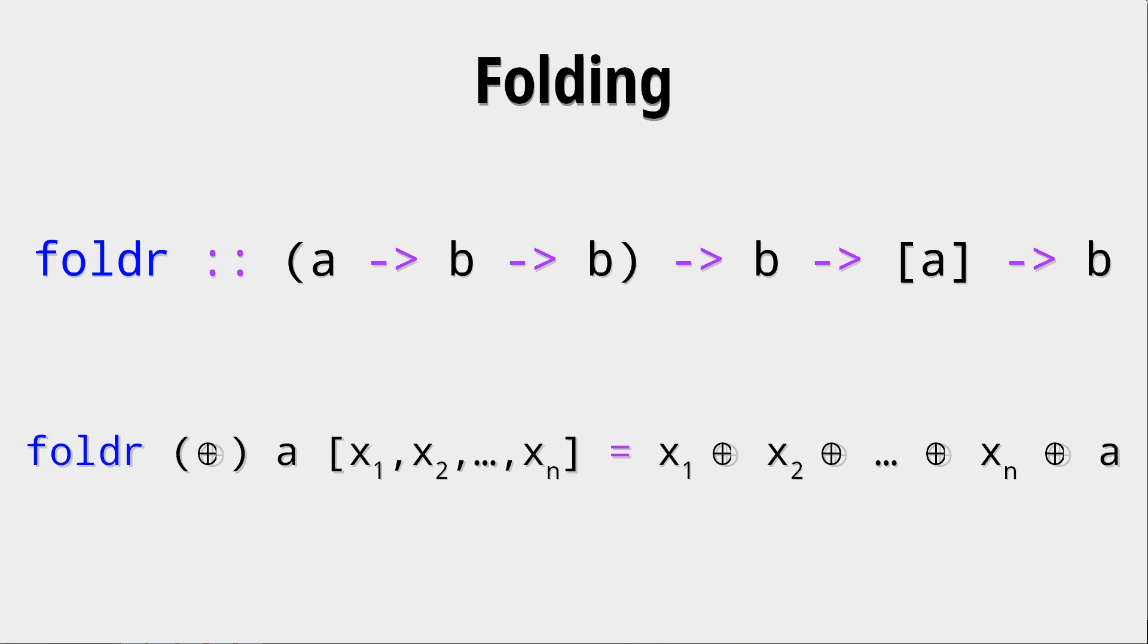And not only that, because since this b type in the type signature is not the same as the type of the list, you can do all sorts of things and we will see some examples what can be done with folding.